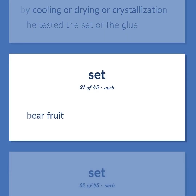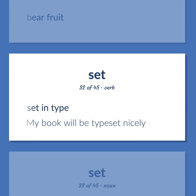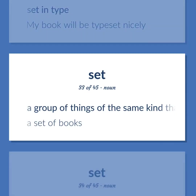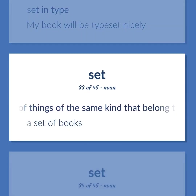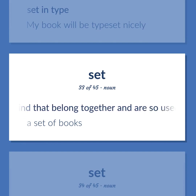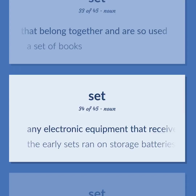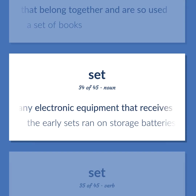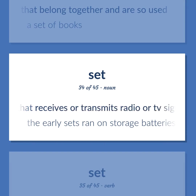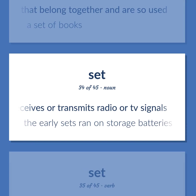Bear fruit. Set in type. My book will be typeset nicely. A group of things of the same kind that belong together and are so used. A set of books. Any electronic equipment that receives or transmits radio or TV signals. The early sets ran on storage batteries.